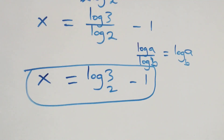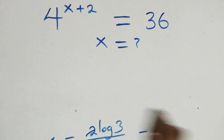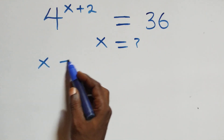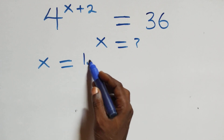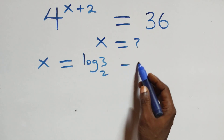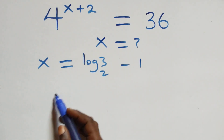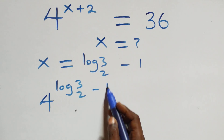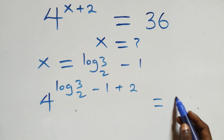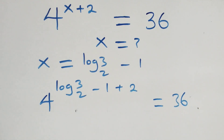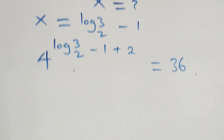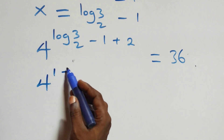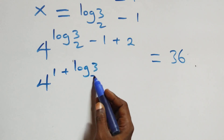Let's check if this satisfies the original problem. We substitute x equals log₂(3) minus 1 back in. What we have becomes 4 raised to the power (log₂(3) minus 1 plus 2). That simplifies to 4 raised to the power (1 + log₂(3)) — is this equal to 36?